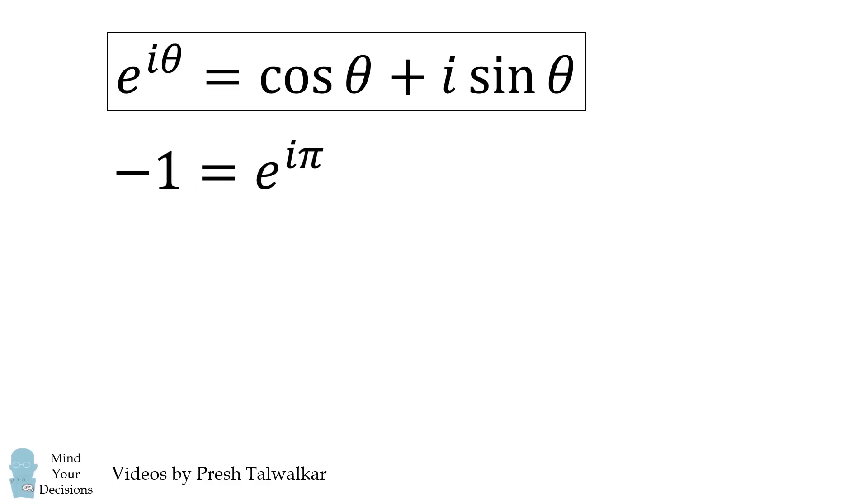Now we have to be a little bit careful here, because that's not the only way that we can get negative 1. There are also other ways that you could get negative 1. But we'll focus on the principal value.